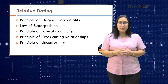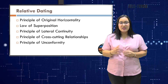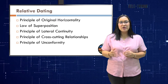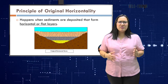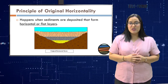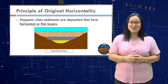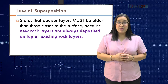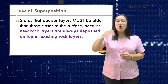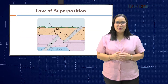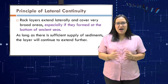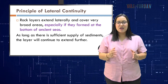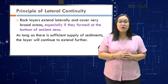Relative dating applies the following principles. The principle of original horizontality happens when sediments are deposited that form horizontal or flat layers. The law of superposition states that the deeper layer must be older than those closer to the surface, because new rock layers are always deposited on top of existing rock layers. The principle of lateral continuity states that rock layers extend laterally and cover very broad areas, especially if they are formed at the bottom of ancient seas. As long as there is sufficient supply of sediments, the layer will continue to extend further.